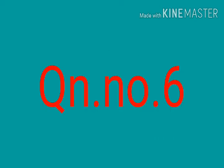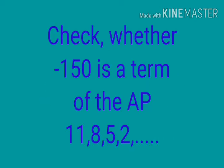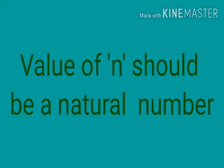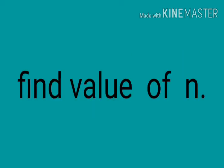Now question number 6. Check whether negative 150 is a term of the AP: 11, 8, 5, 2, etc. This type of question also requires finding the value of N. There is a condition: the value of N should be a whole number. If the value of N is a whole number, then we can say that the given term is a term of the AP; otherwise it is not.